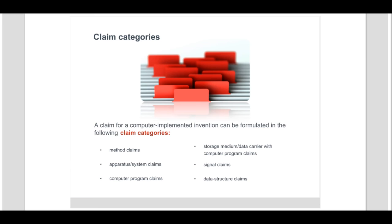The computer program, storage medium, or data carrier with computer program claims are allowed when a corresponding method or apparatus claim is also allowable. A signal claim is allowed if it is defined in terms of the technical features of the system in which it occurs, assuming that the system itself is patentable. A data structure claim is allowed if it is defined in terms which inherently comprise the technical features of the program or system which operates on said data structure, assuming that the program or system itself is patentable.